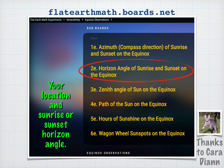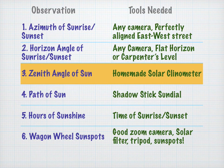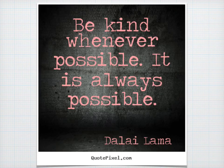If you'd like to share your results, you can go to the message board set up by YouTube user Cara Diane at flatearthmath.boards.net. You can share your location and your sunrise or sunset horizon angle. Our next video is going to be on the zenith angle of the sun, for which you'll need a homemade solar clinometer requiring a plastic protractor. Remember to please be kind whenever possible, because it is always possible. Thank you.